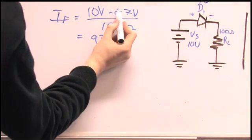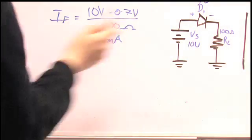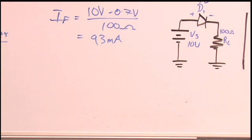Again, the 0.7 is the diode voltage drop, so we take that away from our supply voltage.